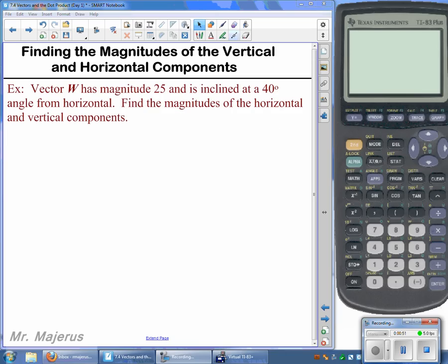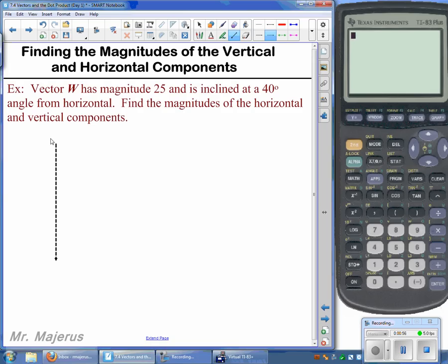If we went ahead and just set up a picture here to help us get a visual, which isn't a bad idea for all of these problems, we're going to be talking about horizontal being east-west line, or this being our zero degree line.